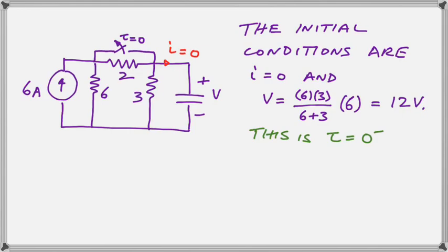When we do that we find that V is 12 volts. Now it's easy to see that because we take the parallel combination and multiply it by 6, V equals IR. And we find that we have a current of 0 and a V of 12 volts at T equals 0 minus.